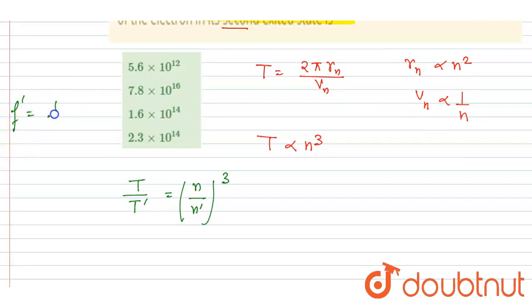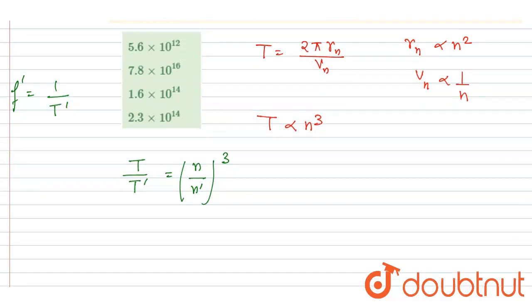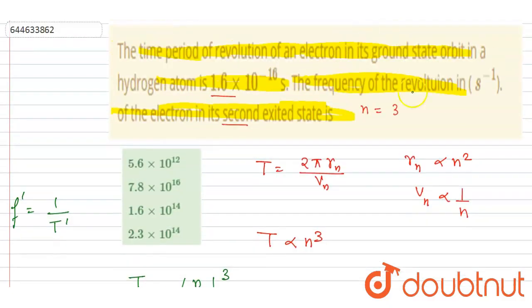So from here I can write down this 1 by T dash is equal to 1 by T into n by n dash whole cube. So 1 by T, if you see it is...